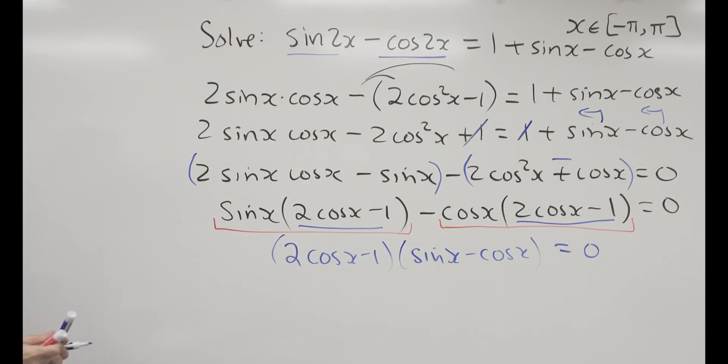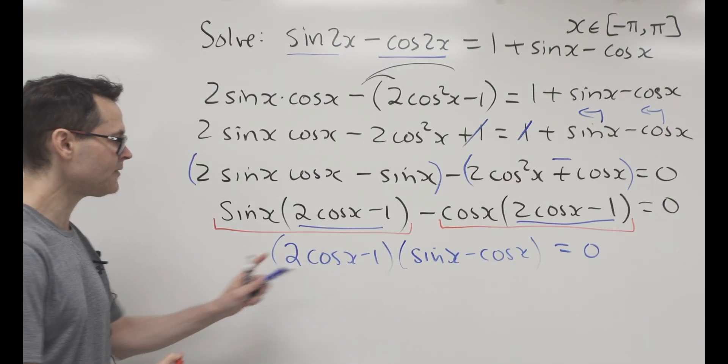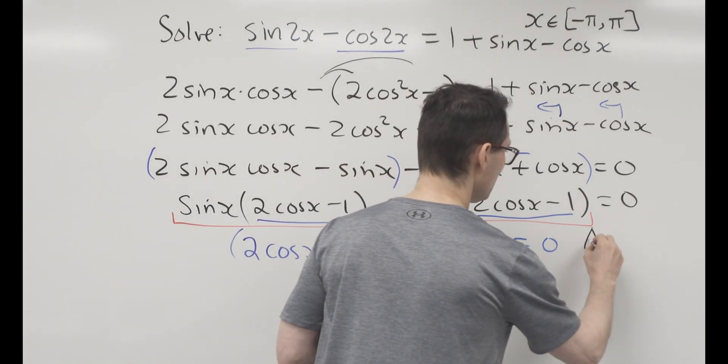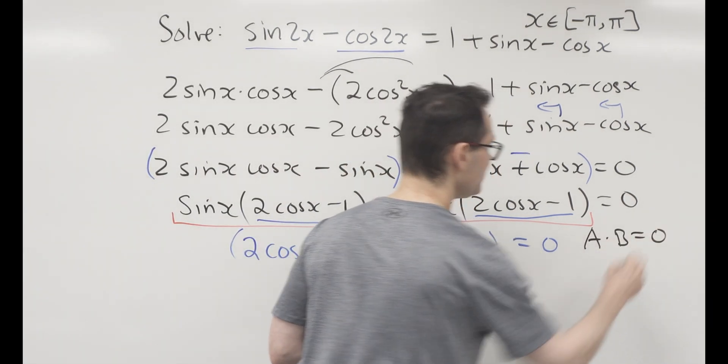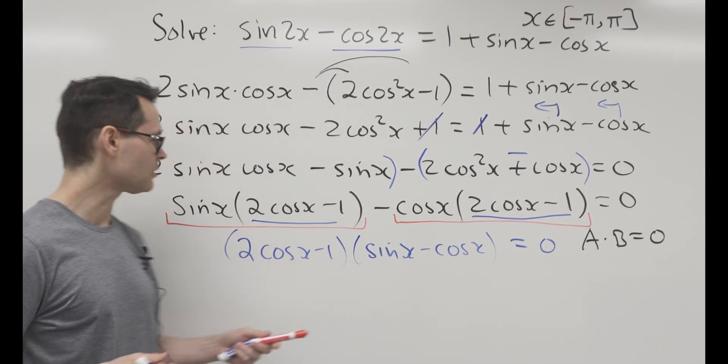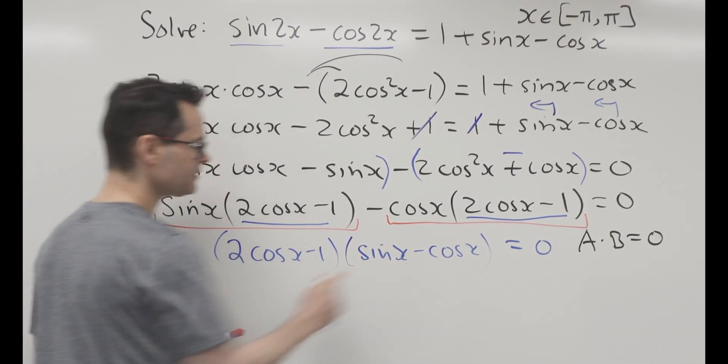Now this is good news, because look, now we have a times b equals 0, and you know, I know you know, a times b equals 0 implies that either a is equal to 0 or b is equal to 0. So this is like the a, this is like the b.